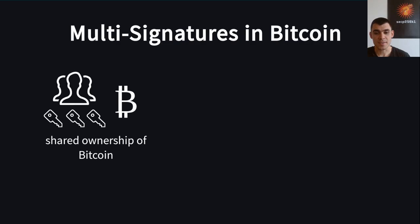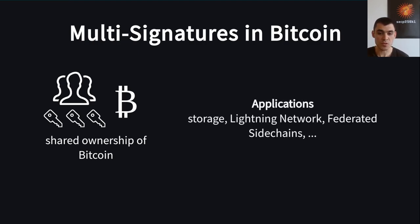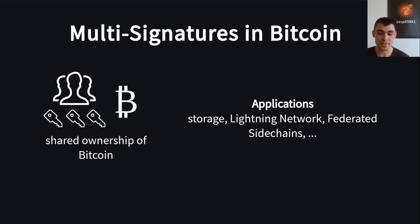Our interest in Schnorr multi-signatures mainly stems from its potential applications to Bitcoin. Bitcoin allows setting up policies that require multiple parties to cooperate and create signatures to spend a coin. This is commonly referred to as multi-sig policy in Bitcoin. It can be used simply to store Bitcoin on multiple devices to achieve a higher level of security. Moreover, many advanced off-chain protocols, also called smart contracts, require a multi-sig policy — for example, the Lightning payment network and federated sidechains.